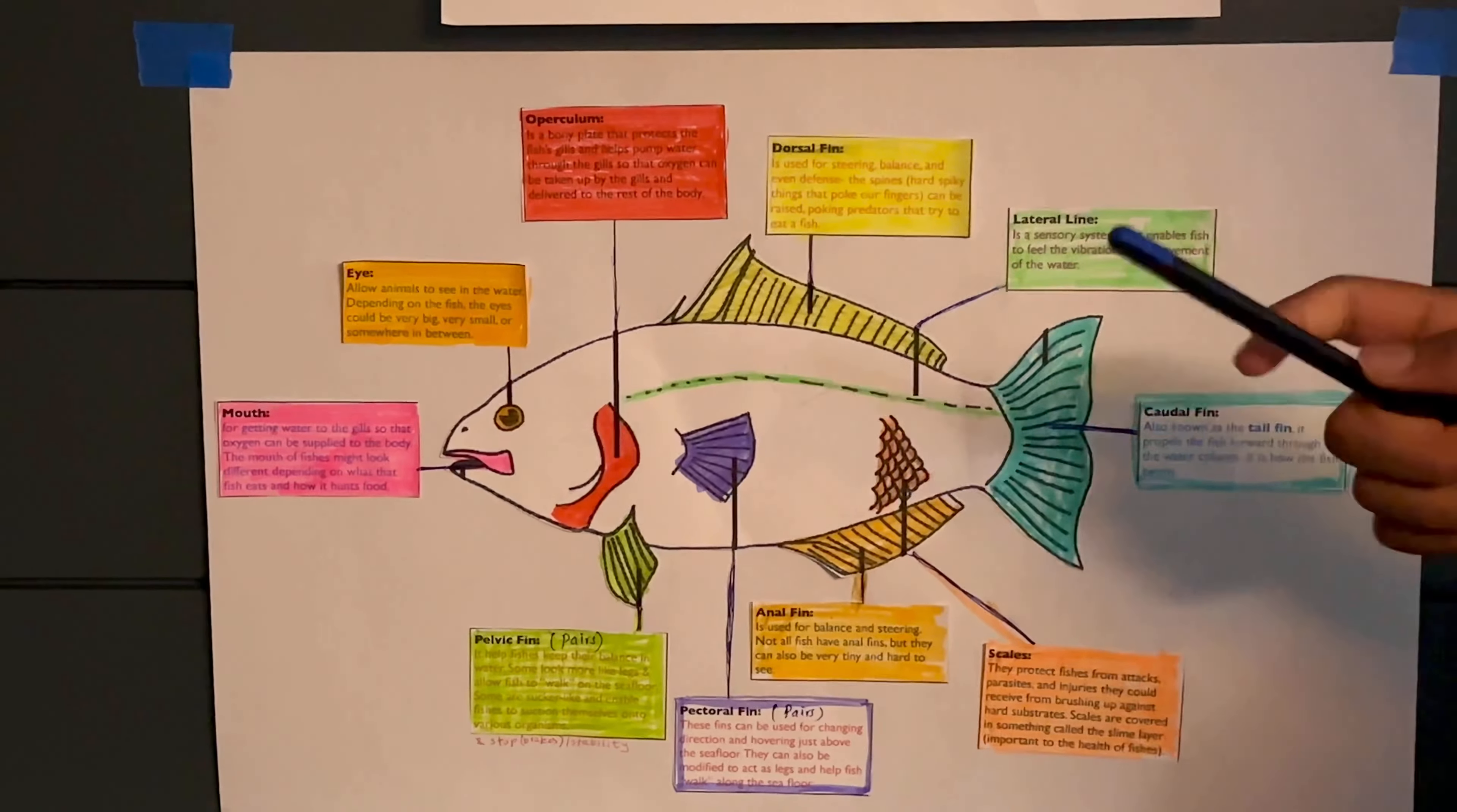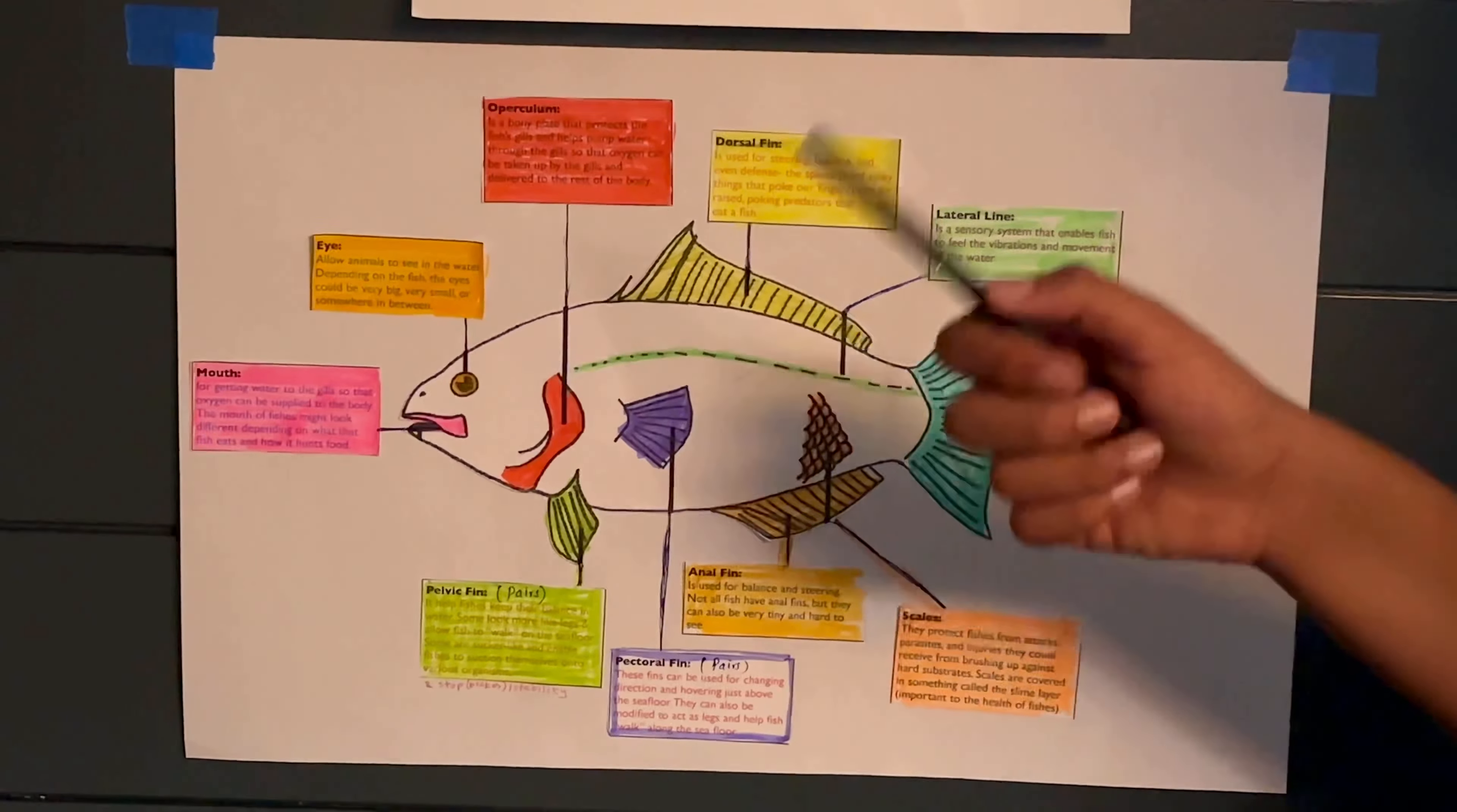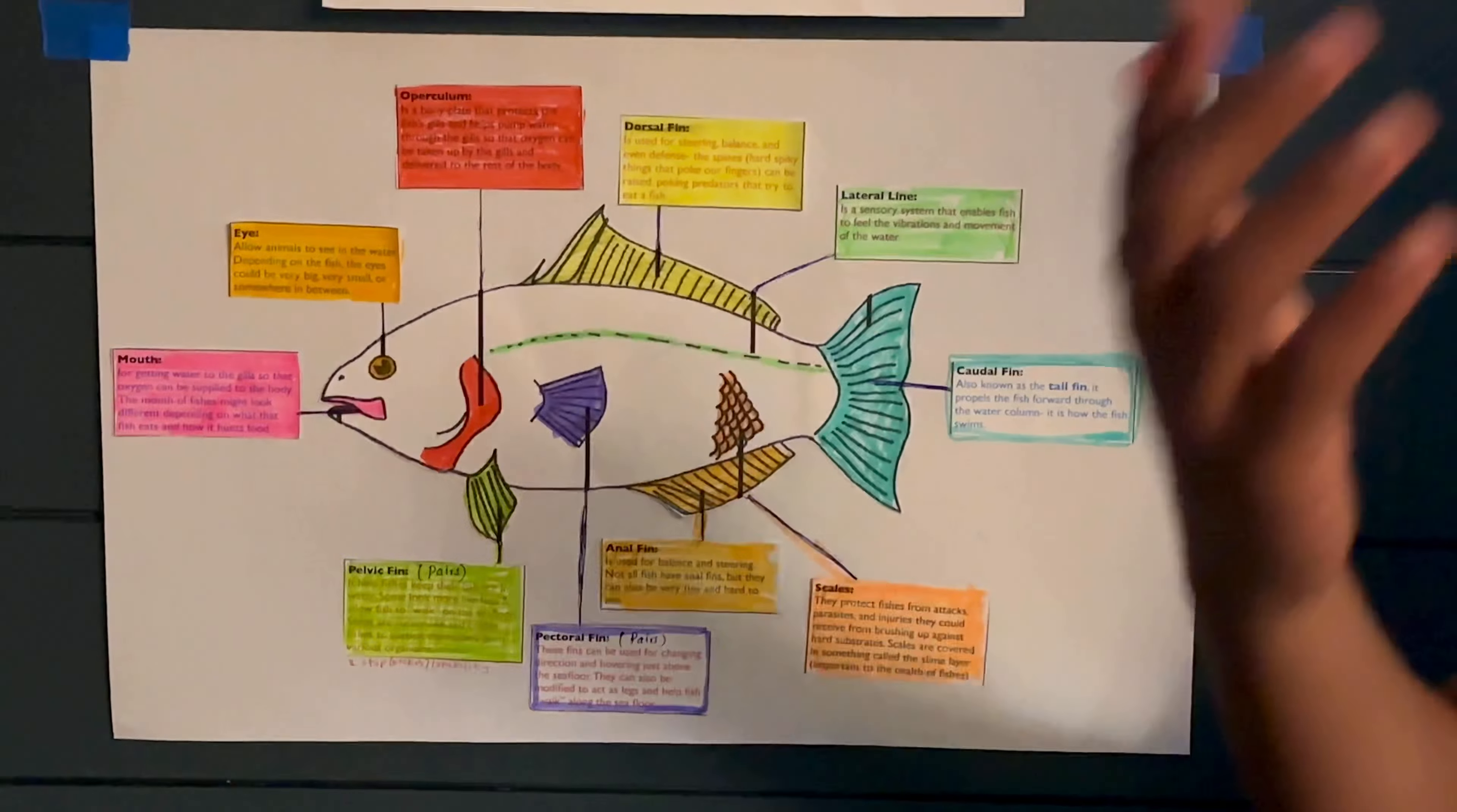Lastly is the dorsal fin. As we see over here dorsal means top so obviously this fin will be at the top or at the back of the fish. This is just for balance. The main purpose of dorsal fin is for balance. The reason why the dorsal and anal fin are so important is if the water current is pushing the fish, then the dorsal and anal fin allow the fish to cut smoothly through the water without inflicting any danger.